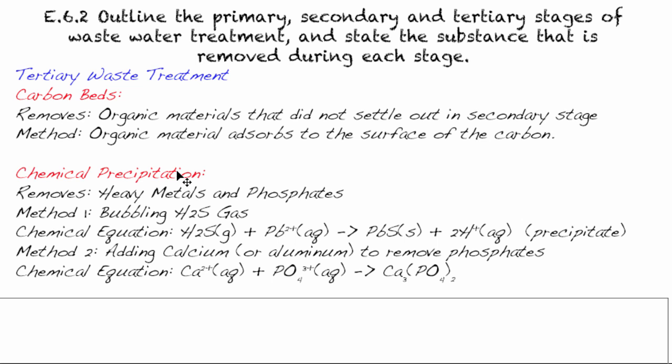Chemical precipitation. So doing a chemical precipitation reaction. Actually, the carbon beds are not a chemical reaction. The chemical precipitation removes our heavy metals. And those can accumulate, and it's very difficult for your body to actually expel the heavy metals. It can also remove phosphates. So a couple methods to go through here. If you want to remove a heavy metal, one of the ways to do that is to bubble through hydrogen sulfide gas. And so what happens there is that the hydrogen sulfide gas will react with, for example, lead. Now you'll see here that this is a gas. The lead is soluble.